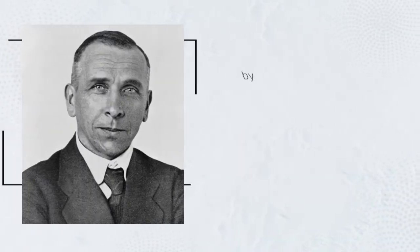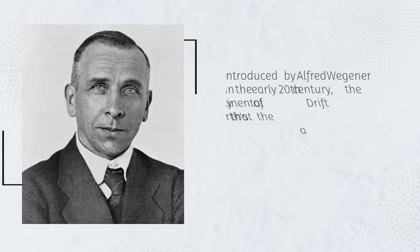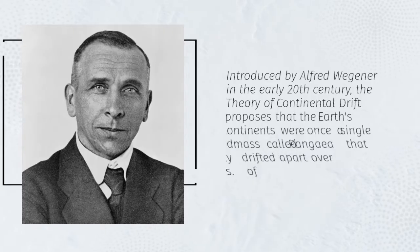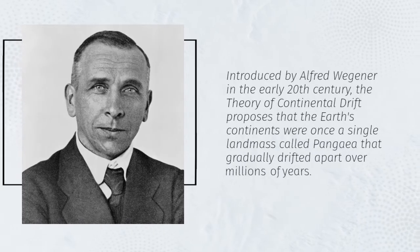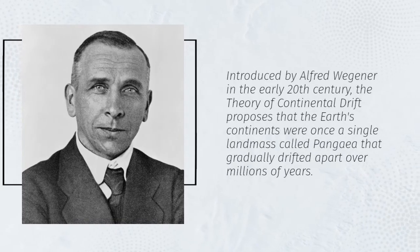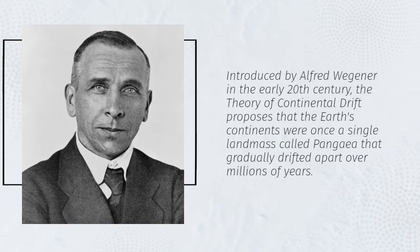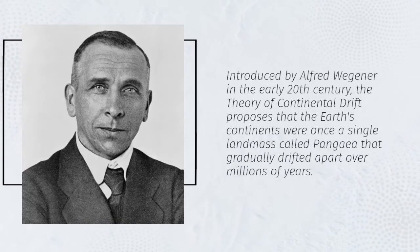Introduced by Alfred Wegener in the early 20th century, the theory of continental drift proposes that the Earth's continents were once a single landmass called Pangaea that gradually drifted apart over millions of years.